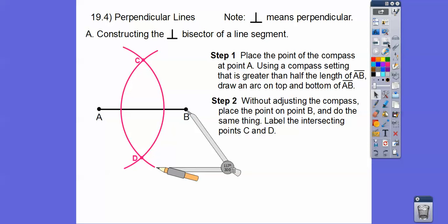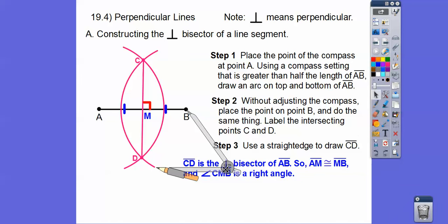Now we're going to label those intersection points C and D. Then we use our straight edge to draw segment CD. Notice I put M right here — M stands for the midpoint, so we bisected the segment. Not only did we bisect the segment, it's also a right angle, so it's a perpendicular bisector. The blue tick marks mean MB is congruent to MA. The right angle means perpendicular, and the tick marks mean bisected — so it's the perpendicular bisector.